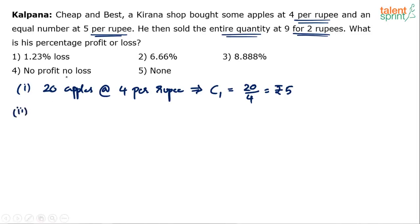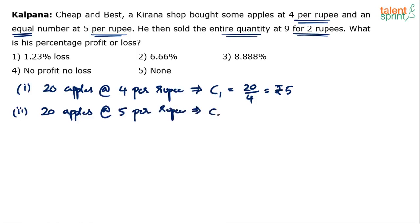In Case 2, again you have bought the equal number of apples — remember, equal number of apples, same number. So again 20 apples only, at 5 per rupee. So what's the cost price C2? You have bought 20 apples at 5 apples per rupee. In 1 rupee you get 5 apples, so for 20 apples you'll spend 20 by 5, which is 4 rupees.